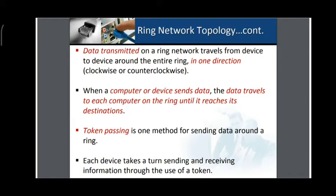A classical example would be attendance taken in class: the teacher calls out the first roll number first, followed by the second, then the third. That is called token passing — it is in sequential form, one followed by the second, followed by the third, and so on. Token passing is one method for sending data around a ring; each device takes a turn sending and receiving information through the use of a token.